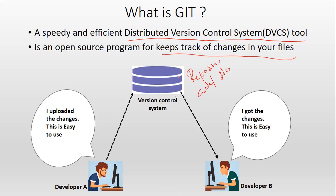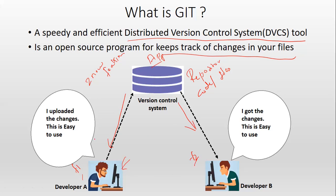Let's assume a scenario where we have one developed application and the client has come up with two new features. I will assign feature 1 development to Developer A and feature 2 development to Developer B. Both start working on the same source code — they pull the code from the repository to their local machine, and Developer A starts developing feature 1 while Developer B starts developing feature 2.